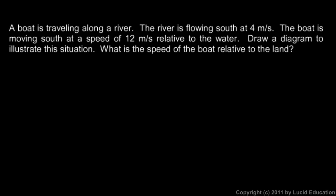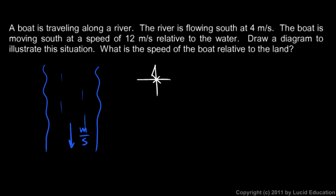Here we're told that a boat is traveling along a river. The river is flowing south at 4 meters per second, and the boat is moving south at 12 meters per second relative to the water. We're told to draw a diagram to illustrate this situation. The water is flowing at 4 meters per second to the south — I'll draw south downward, as on a typical map where north is up and south is down, east is right and west is left. So there's the river moving at 4 meters per second.